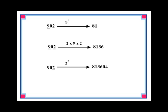In the last step we square the rightmost digit 2. The square of 2 is 4. Now write 4 next to 8136 as shown. Thus our final result is 813,604 which is the square of 902.